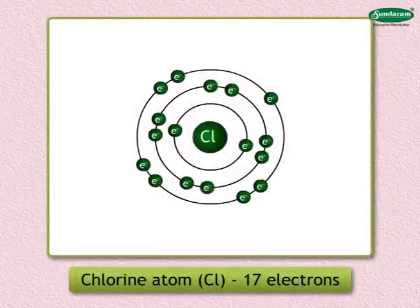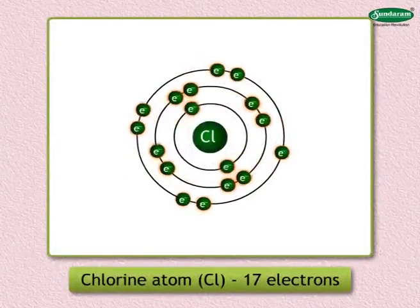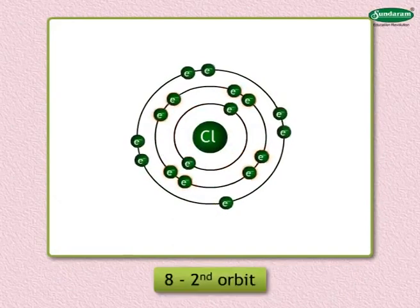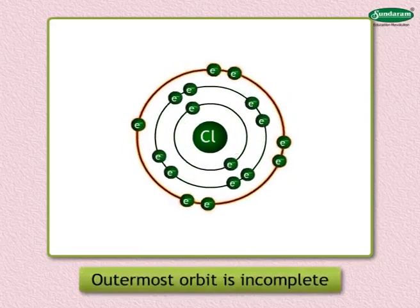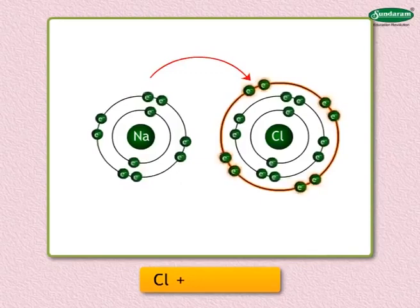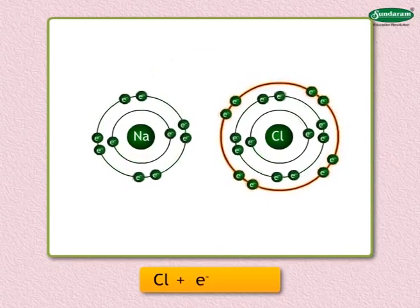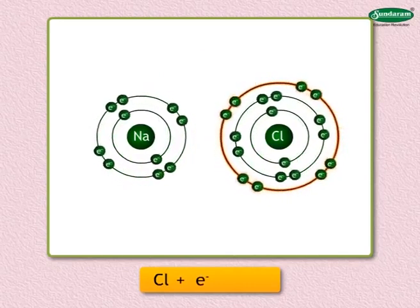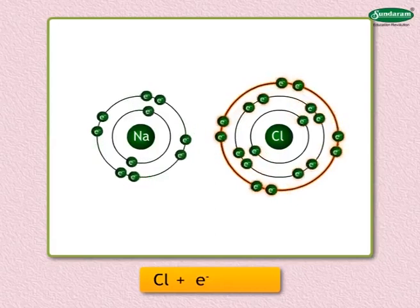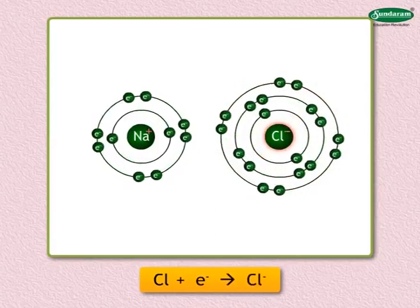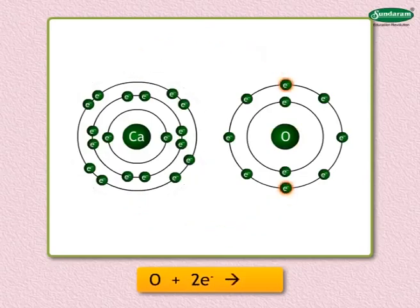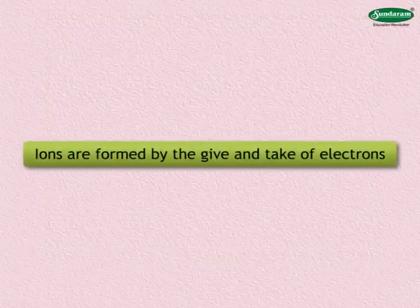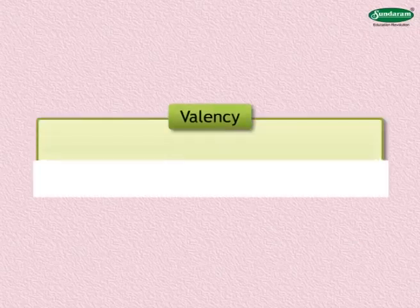On the other hand, a chlorine atom has 17 electrons — two in the first orbit, eight in the second, and seven in the third orbit. The outermost orbit is incomplete, so to complete it chlorine must receive one electron. After receiving one electron, the number of electrons (18) becomes one more than the number of protons (17), so the chlorine atom gets a negative electric charge. Similarly, oxygen accepts two electrons and becomes negatively charged. Thus, ions are formed by the giving and taking of electrons.